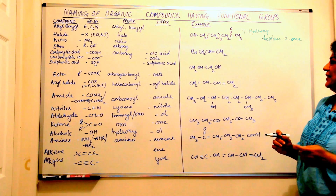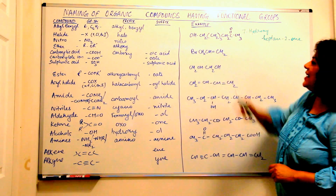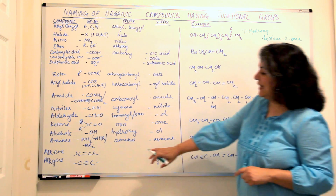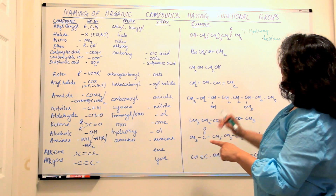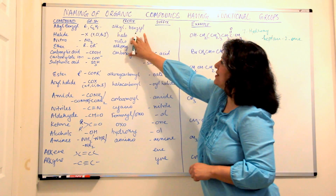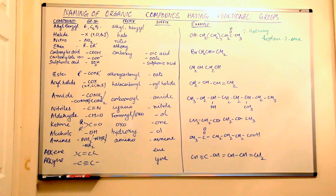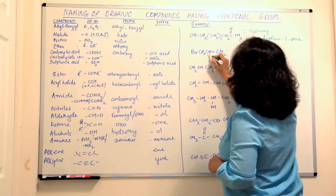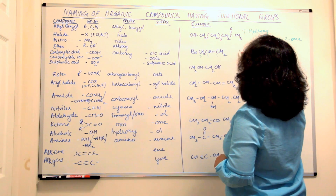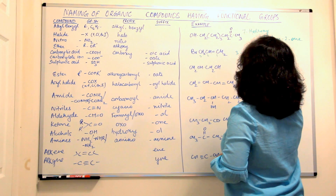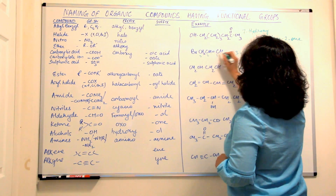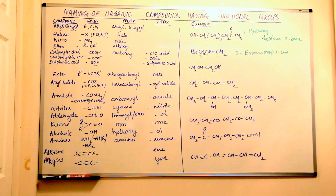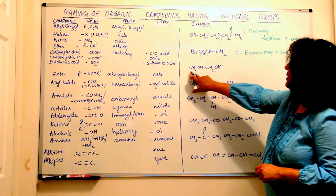This compound is 7-hydroxyheptan-2-one. The next compound has unsaturation (an ene) and a bromine atom (a halide). When you have an ene and a halide, the ene suffix comes at the end while the halide is always written as a prefix. This is propene, numbered one, two, three. The bromo is at the third carbon, and the double bond is at carbon one, so this is written as 3-bromopropene.